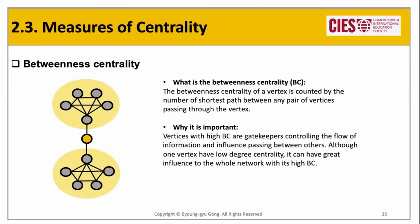The next centrality measure is betweenness centrality. The betweenness centrality of a vertex is counted by the number of shortest paths between any pair of vertices passing through that vertex. If two clusters of a network are connected only through one yellow vertex, although its degree centrality is only 2, its betweenness centrality would be incredibly huge. If we delete that yellow vertex, we would lose a large number of connections between the two clusters. Vertices with high betweenness centrality are gatekeepers, controlling the flow of information and influence passing between others.